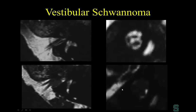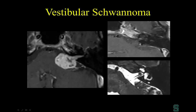For vestibular schwannomas, we now do heavily T2-weighted images routinely. You just look for replacement of the normal CSF. This parasagittal view shows all CSF replaced by vestibular schwannoma. For very small schwannomas — even two millimeter ones — I would argue you can see them better on these thin T2-weighted images than on contrast-enhanced studies.